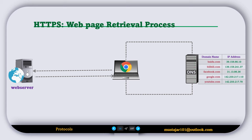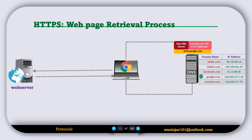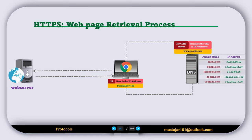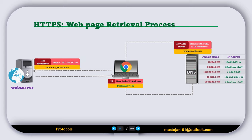Let's look at the HTTPS web page retrieval process with this illustration. The user enters the URL into the browser's address bar. The browser contacts the DNS server to get the IP address for the domain. The DNS server finds the domain and sends back the IP address. The browser uses this IP address to request the web server's digital certificate. The server sends the certificate, the browser checks its authenticity, and if valid, the browser requests the web page using HTTPS. The server sends back the web page via HTTPS, and the browser renders and displays it.